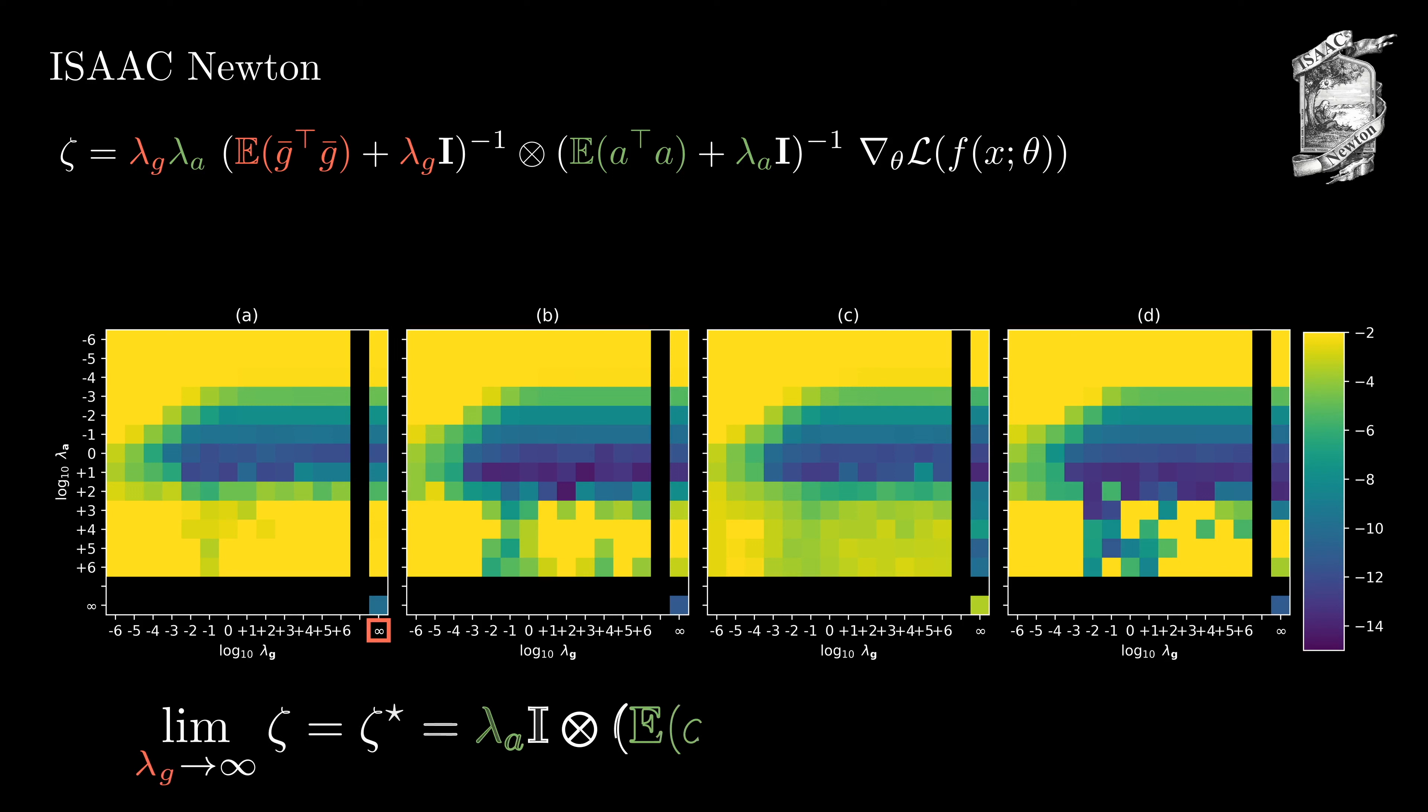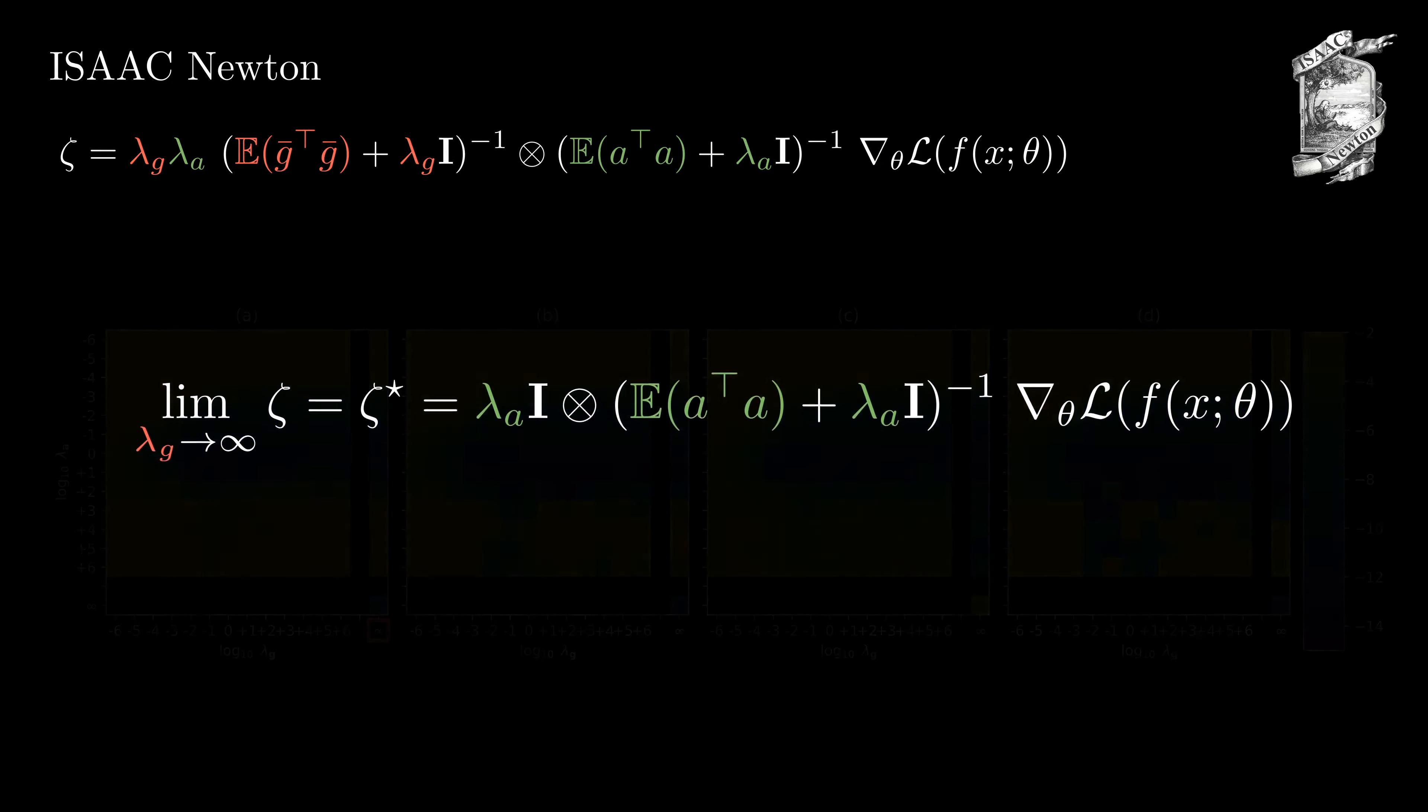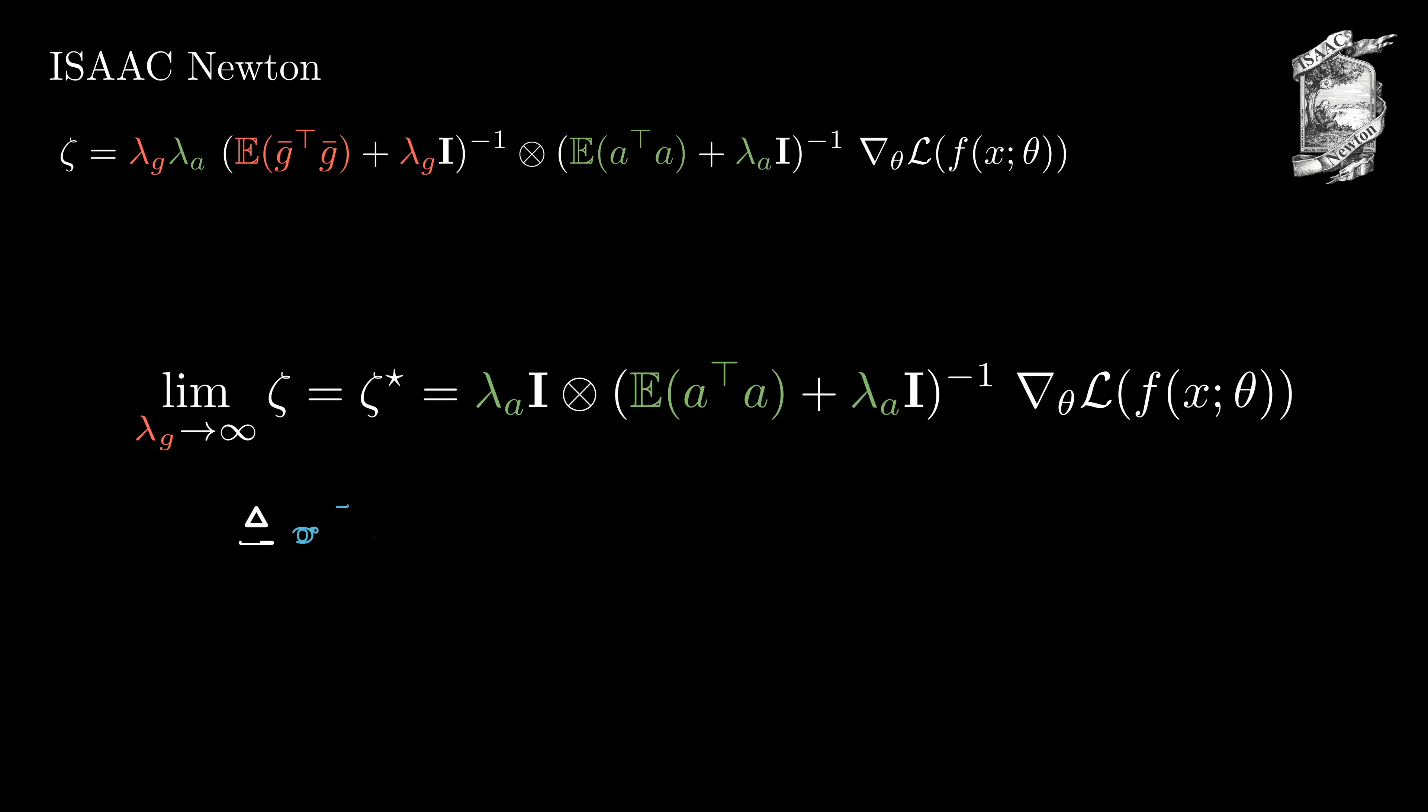Specifically, we call the limit of zeta with lambda g to infinity zeta star or ISAAC. We can see that this limit is independent of g bar and effectively replaces the respective term with the identity. Via some algebraic transformations including the Woodbury matrix identity and the Kronecker product rules, we can empirically estimate the update zeta star as g transpose times a small matrix times a. Here, g is the gradient of the layer output and b is our batch size.